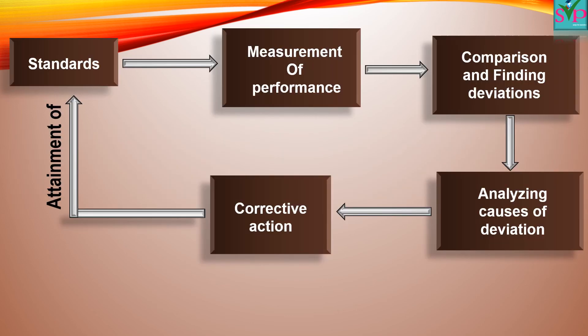Dear students, have a look at the diagram to understand this more clearly. Attainment of standard is the goal. For this, the manager measures the performance of employees — both actual and standard performance are studied. Then the manager makes a comparison between actual work and standard work to find out deviations or errors, if any, while performing a given task. They then find out the causes of deviations and accordingly take corrective action so that the same error will not occur again in future — all to bring standard or efficiency in work.